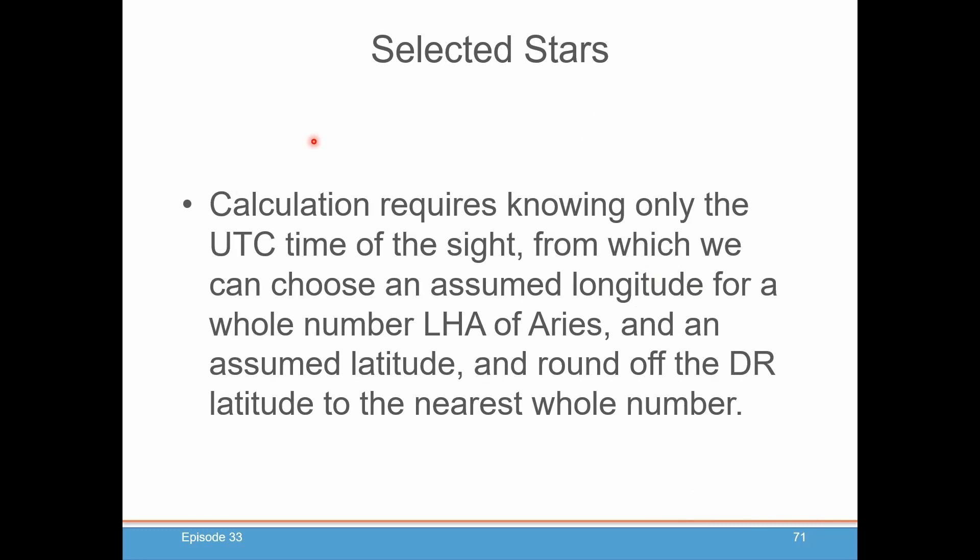All calculation requires knowing is your UTC time of your site, and of course your latitude and longitude — your DR latitude and longitude. Then you're going to calculate a whole number LHA of Aries. You're going to calculate an assumed latitude, which will be just your rounded off DR latitude to the nearest whole number.